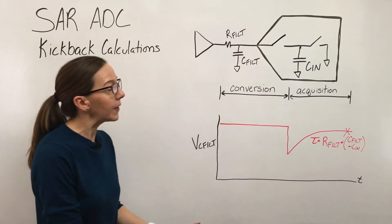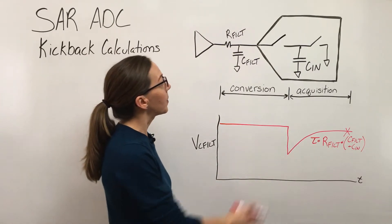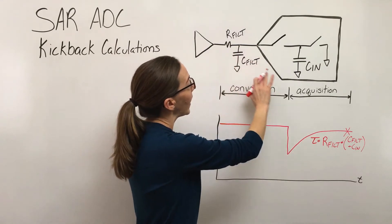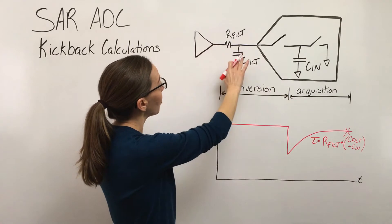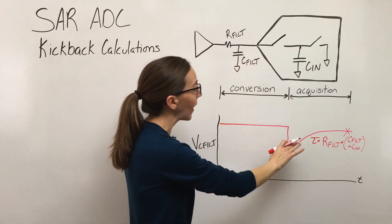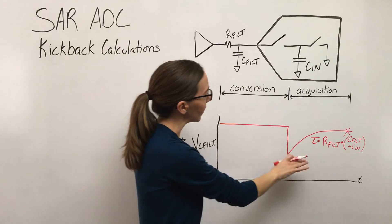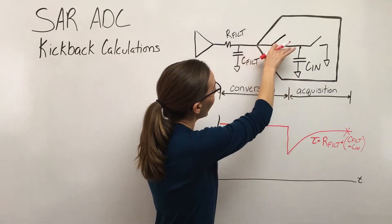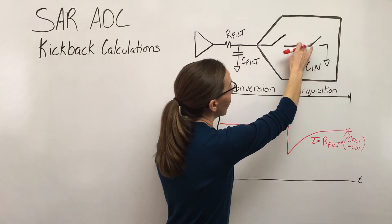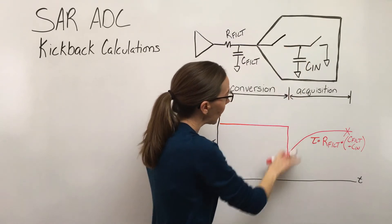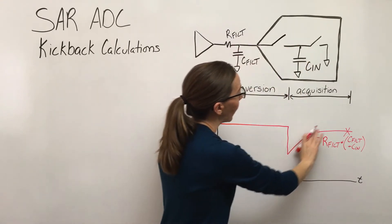In the previous video we talked about what this SAR ADC input model was and how this driver and RC filter impact that. We came up with this curve here that shows what happens when this switch closes and this node, which we're going to assume is sitting at ground, drags this whole node down.